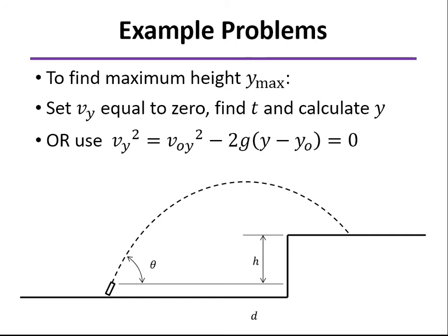And from that, you can find t and then plug in the equation to find y. But an easier way to do that is to bypass the time altogether, is use that equation with the vy squared. Again, you know the initial velocity, you know that final velocity is equal to zero. And that way you can solve y minus y naught, and that will give you the maximum height.